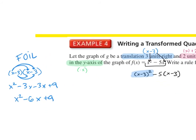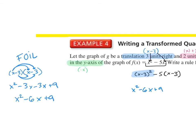So we foiled them. Now let's rewrite it. We have x squared minus 6x plus 9. And then for the second part, negative 5 times x minus 3: negative 5 times x is negative 5x, and negative 5 times negative 3 is plus 15. Now we combine like terms: x squared minus 11x plus 24.